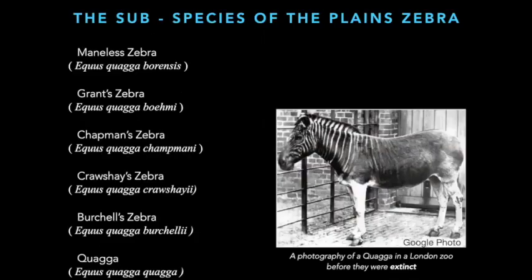The six subspecies of the plains zebra are: the maneless zebra, the Grant's zebra, the Chapman's zebra, the Crawshay's zebra, the Burchell's zebra, and the quagga. The quagga is currently extinct. The picture to the right is of a quagga taken from a London zoo before they went extinct. It appeared to be half zebra, half horse — it looked like a zebra from its head to its shoulders, then like a brown horse from the shoulders to the hindquarters, with prominent white socks.